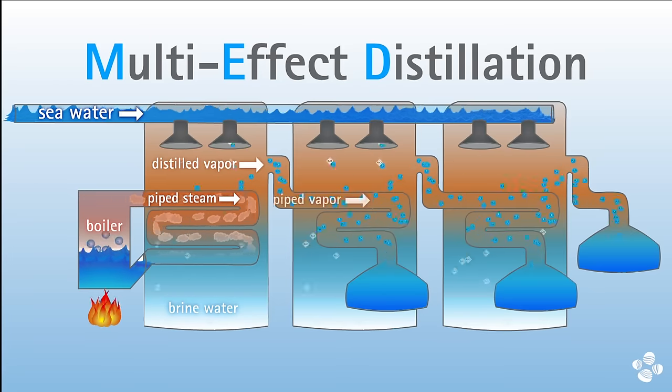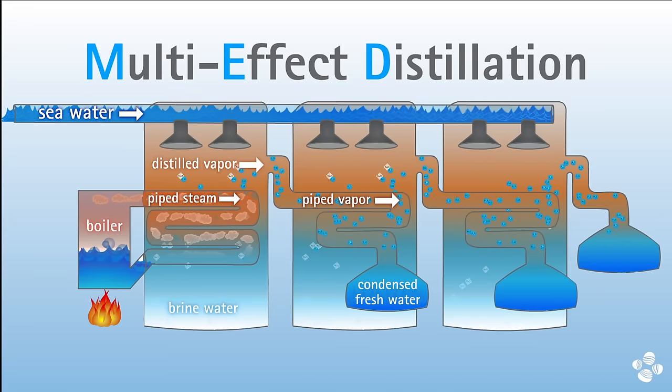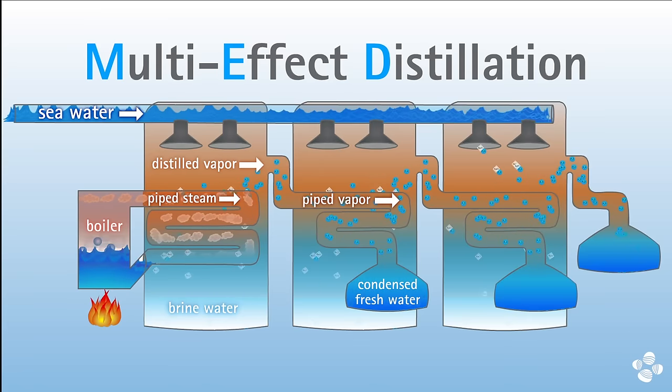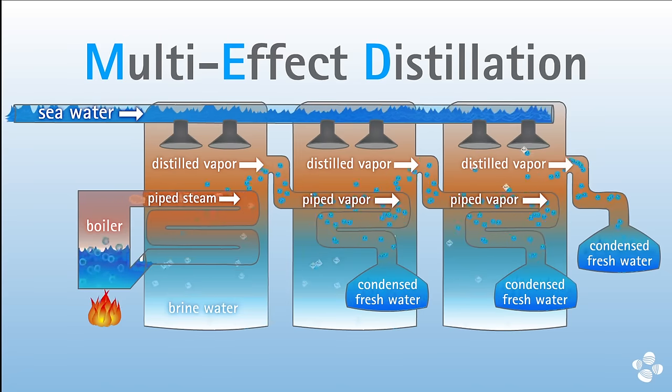This hot water vapor is then used to heat the next stage of the evaporation process, where the water then cools and condenses and is collected as pure, fresh water. This is done several times at progressively cooler temperatures to generate more and more clean water.